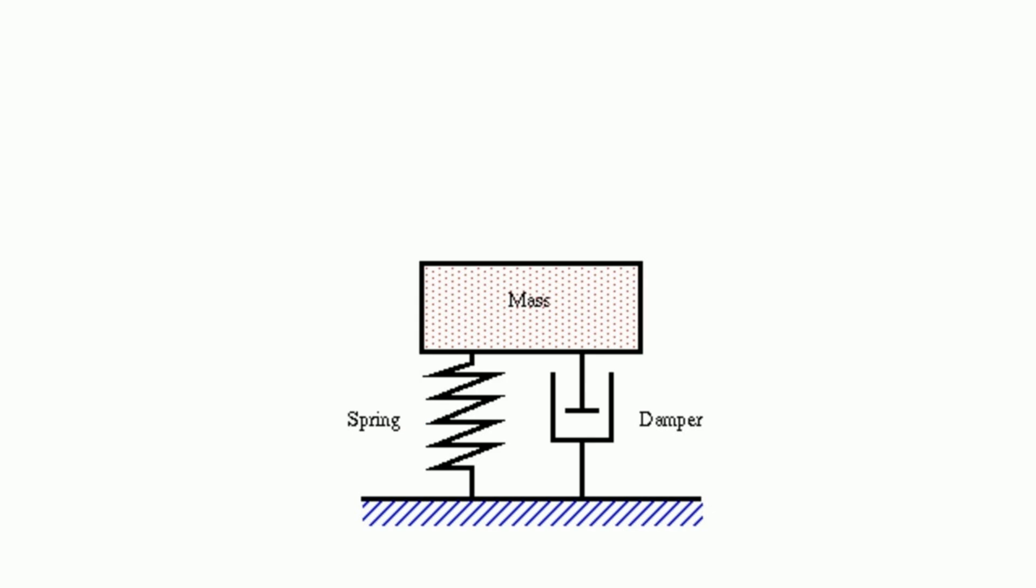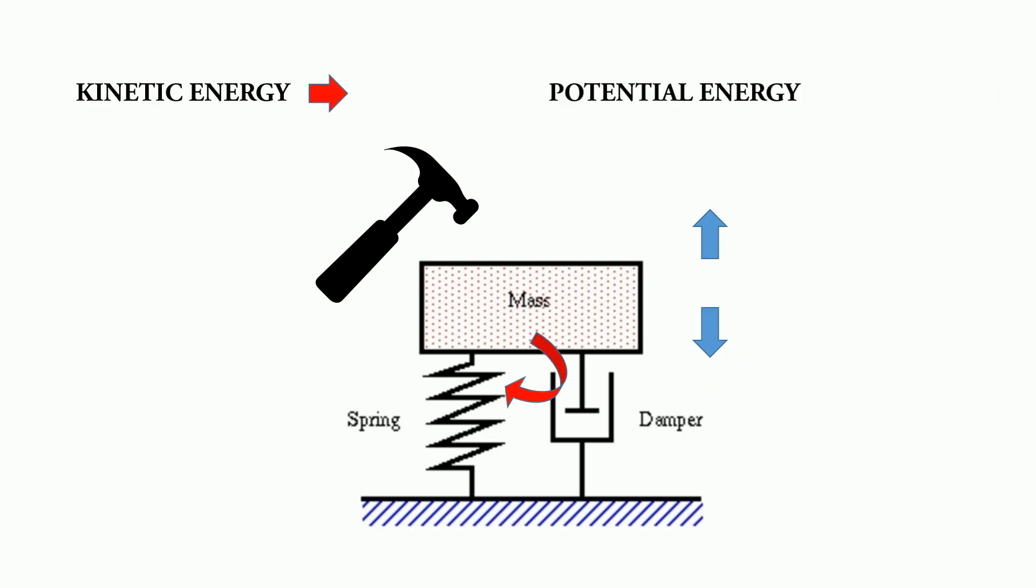Energy enters the system with the application of external force known as excitation. The mass goes up and down from its mean position. The kinetic energy is converted into potential energy and the potential energy is converted into kinetic energy. This goes on repeating and the system continues to vibrate.